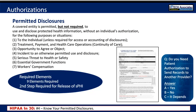Your office is not always required to have an authorization before the release of medical records — there are what are called permitted disclosures. A covered entity is permitted, but not required, to use and disclose protected health information for payment, treatment, and healthcare operations — in other words, continuity of care. You would use an authorization anytime patient records are going outside of TPO: treatment, payment, or healthcare operations.